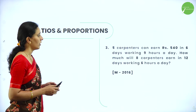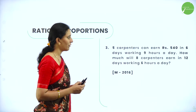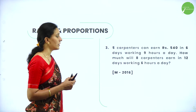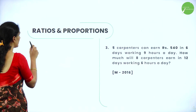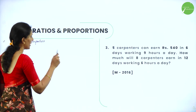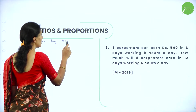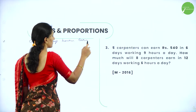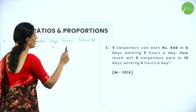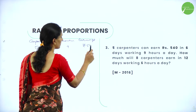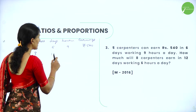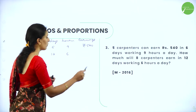Next question: 5 carpenters can earn rupees 540 in 6 days working 9 hours a day. How much will 8 carpenters earn in 12 days working 6 hours a day? Let's write each separately — carpenters, days, hours, and earnings. 5 carpenters work 6 days for 9 hours and earn rupees 540. Now we have 8 carpenters working for 12 days and 6 hours — what are their earnings?